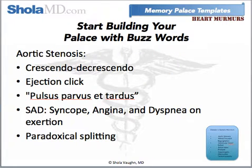So for aortic stenosis, I put five buzzwords into my palace: crescendo-decrescendo, ejection click, pulsus parvus et tardus, SAD — which is syncope, angina, and dyspnea on exertion — and paradoxical splitting. In the memory palace, you make up your own images for these buzzwords. So for crescendo-decrescendo, I had my boss turning up and down the music — we were working at a music label, so it kind of worked out perfectly.